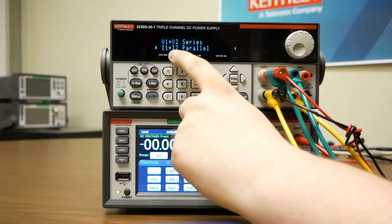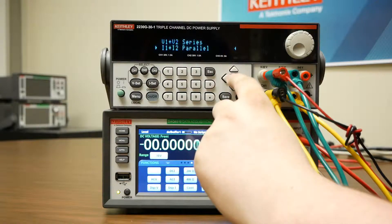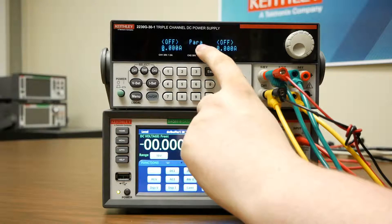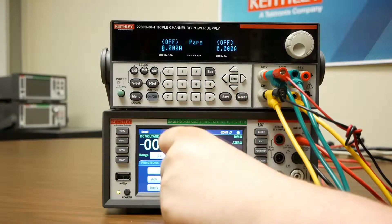and then select I1 plus I2 parallel, and press enter. You'll know this is correct when you see PARA for channel 2, meaning the current output is controlled by channel 1.